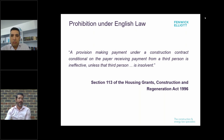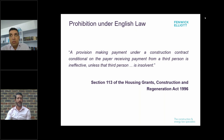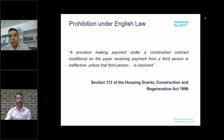Under section 113 the subcontractor has the ability to force the contractor's hand. Another situation the Act seeks to avoid is where a subcontractor has completed its scope of work, submitted its payment applications and received a certificate confirming the sum it's entitled to, but a dispute has developed between the main contractor and the employer — a dispute having nothing to do with the subcontractor — that has caused the employer to suspend payment generally. That dispute could take many months to resolve. Section 113 stops a subcontractor from having to wait and potentially risk insolvency because of a dispute that has nothing to do with it.